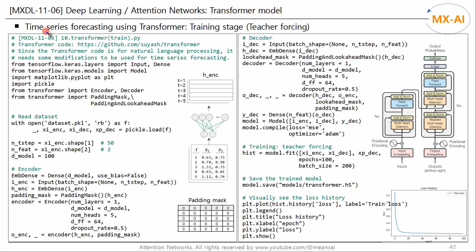Now let's write code to predict a time series using a transformer model. First, we write the code for the training stage — teacher forcing. Import the encoder and decoder classes from the transformer code we just modified. We also import the padding mask and padding and lookahead mask classes. Read a time series data set — this is the data set used in the seq-to-seq attention model in the previous video. The number of time steps, i.e. the length of the sequence, is 50. The number of features is 2. For more information about the time series data set, please watch the first video in this series.